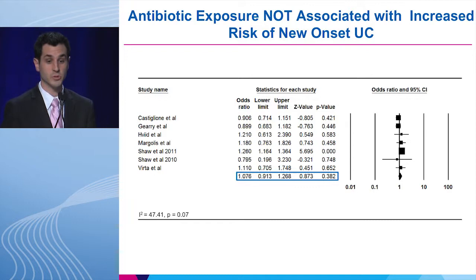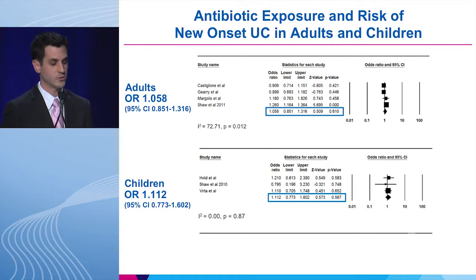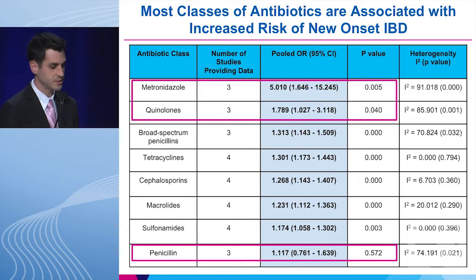In contrast, when we looked at ulcerative colitis and pooled all results together, we did not see any association between antibiotic use and the risk for new onset ulcerative colitis. This held true when we stratified by age as well.